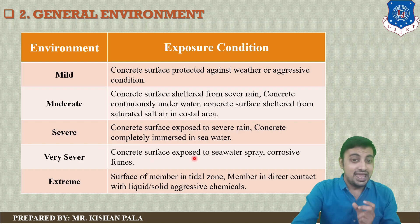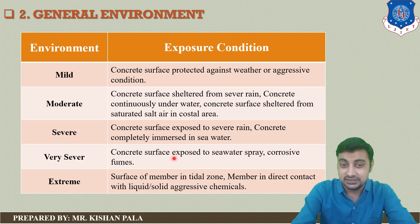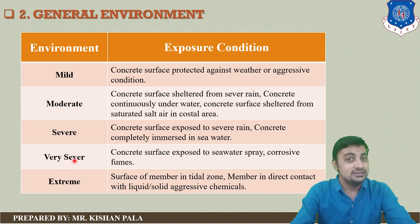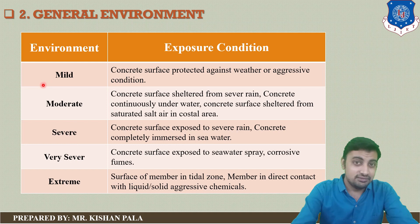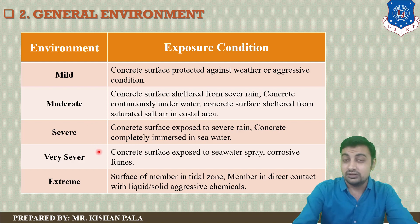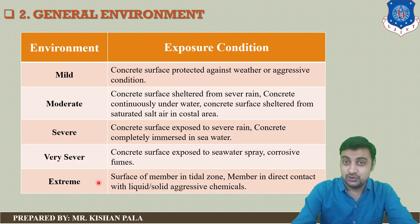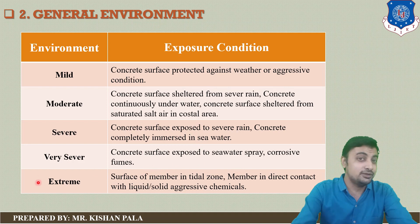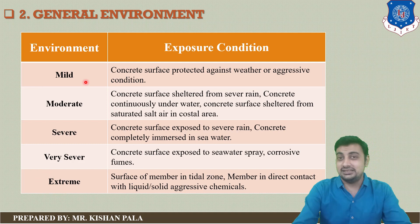For very severe condition, concrete surfaces exposed to sea water spray and corrosive fumes are considered very severe. The environmental condition levels are: first, mild; second, moderate; third, severe; fourth, very severe; and the last is extreme. The second column of the table provides the explanation for each particular environment.